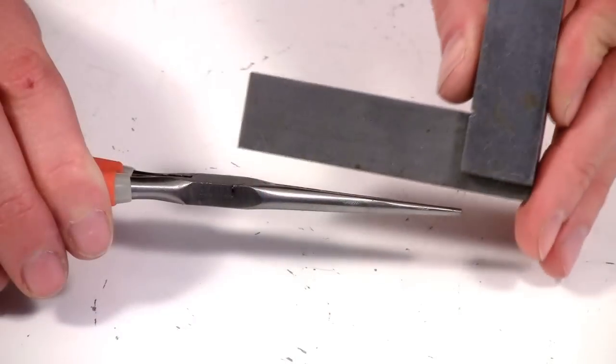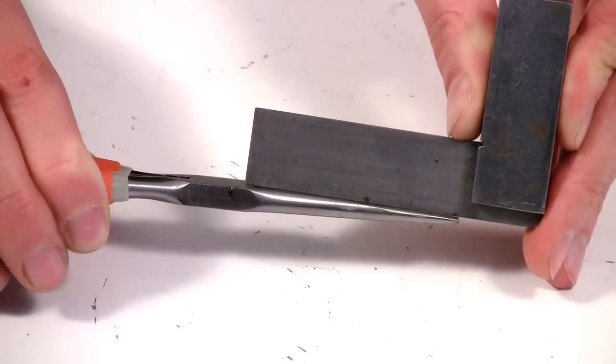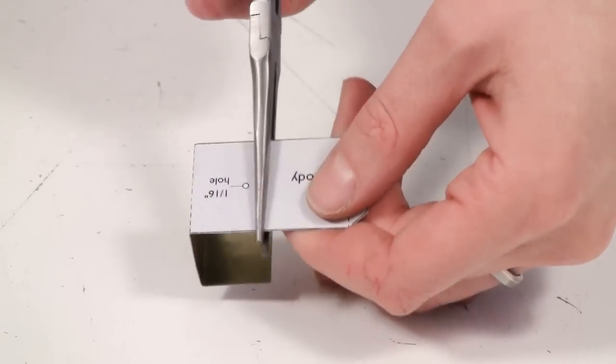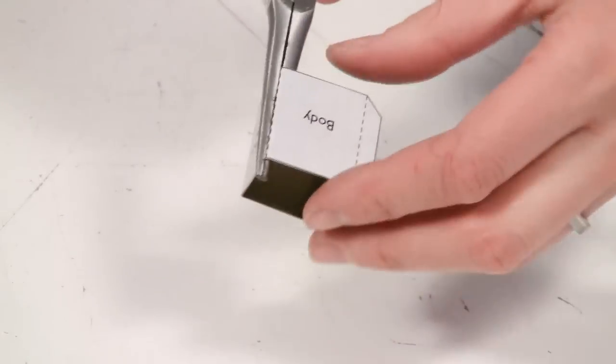To use the jaws of your pliers to make a bend, make sure that the edges of the jaws are actually straight. To make the bend on a small piece, align your fold line with the jaws, then simply fold the tin plate over with your fingers.